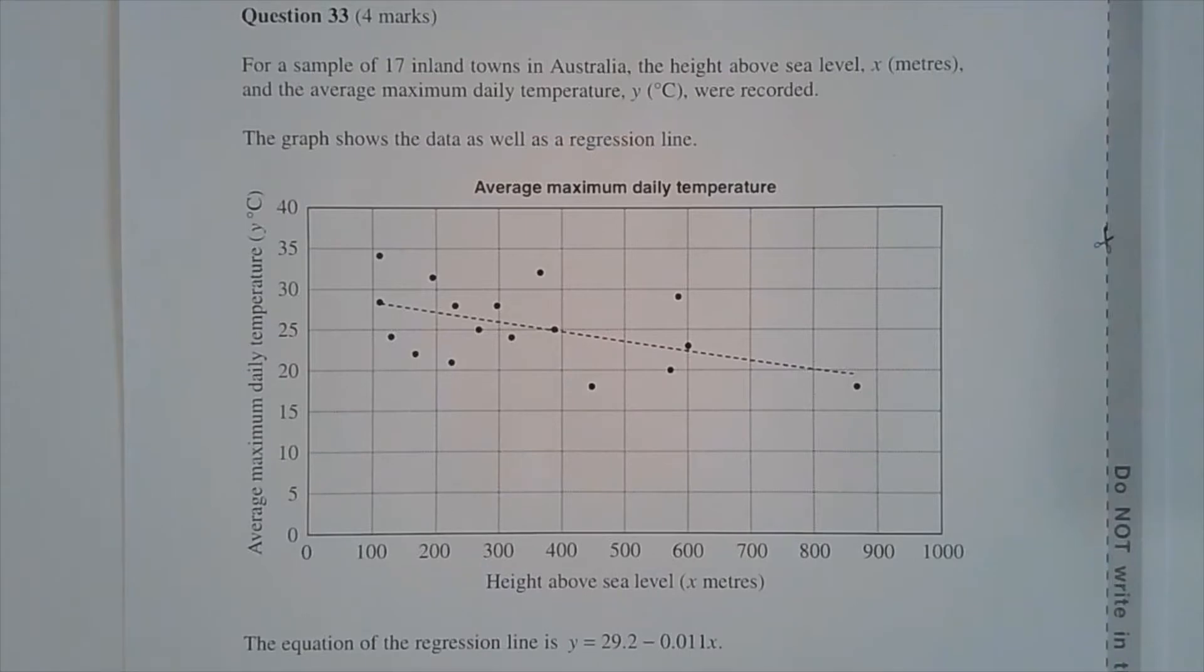Question 33. For a sample of 17 inland towns in Australia, the height above sea level and the average maximum daily temperature were recorded. The graph shows the data as well as a regression line.